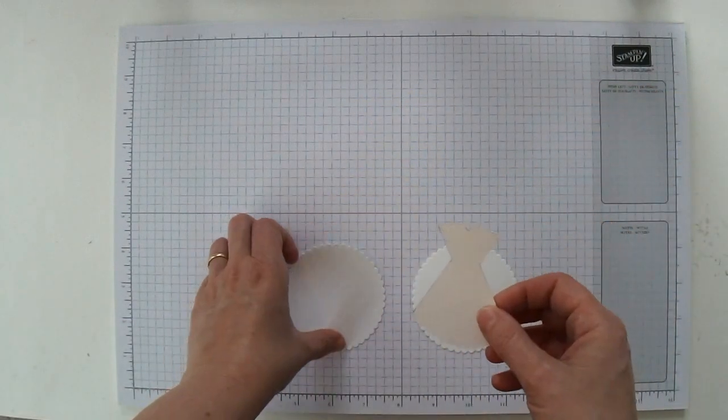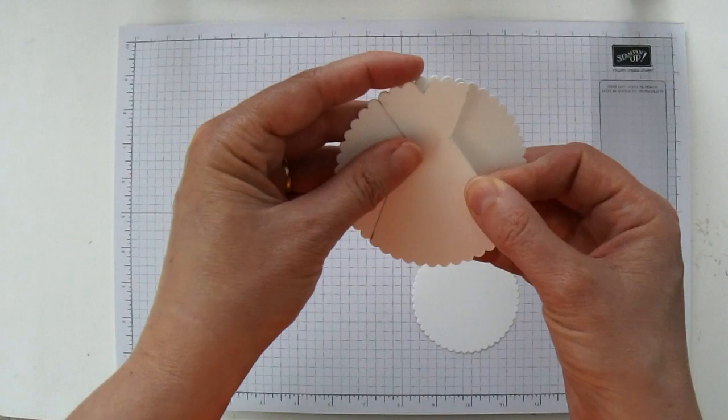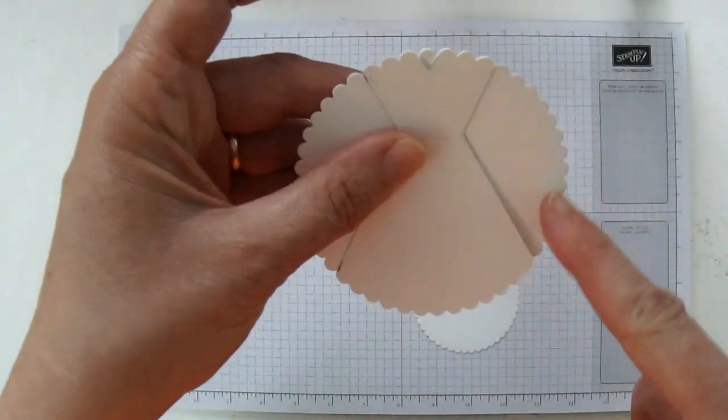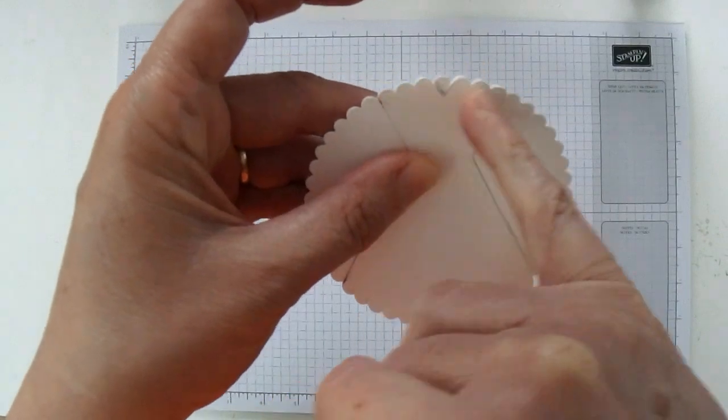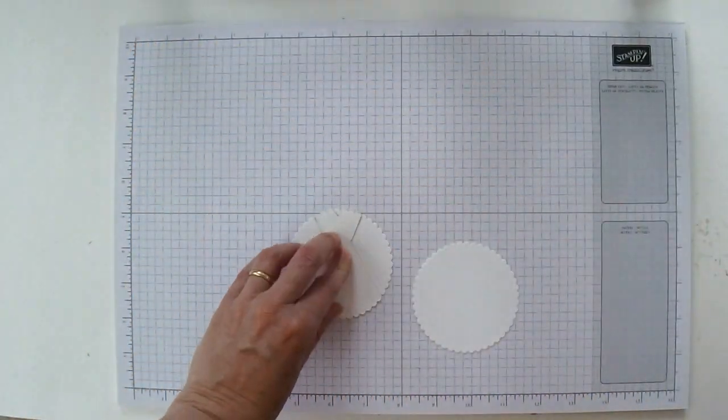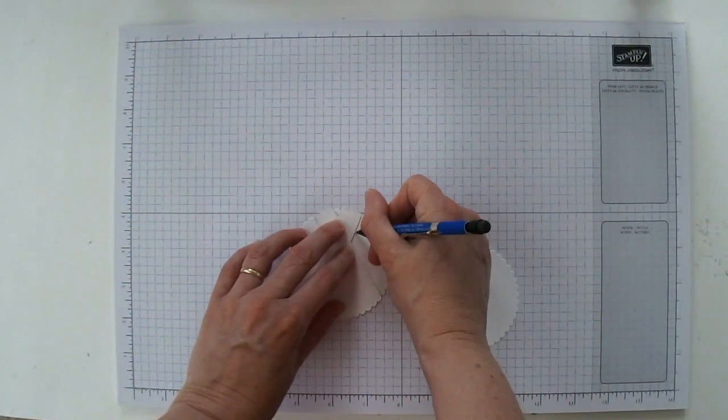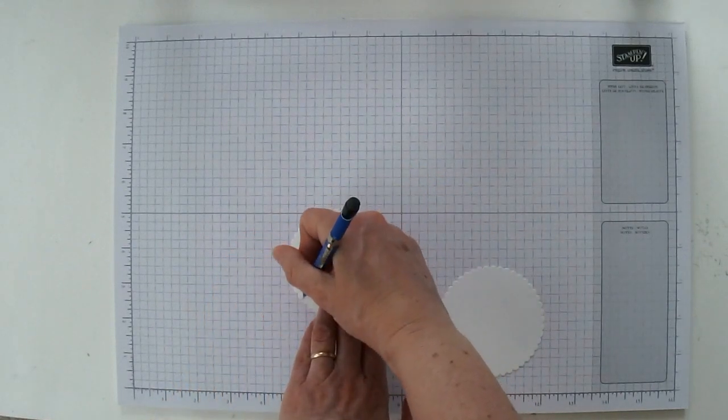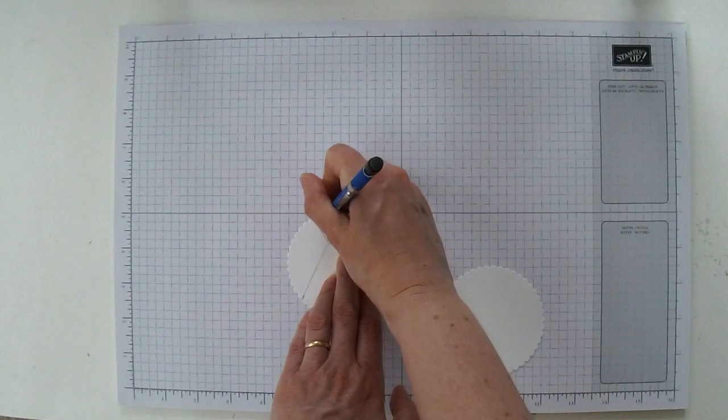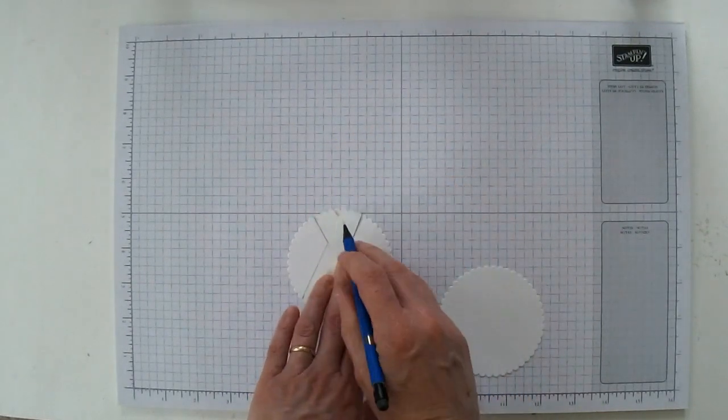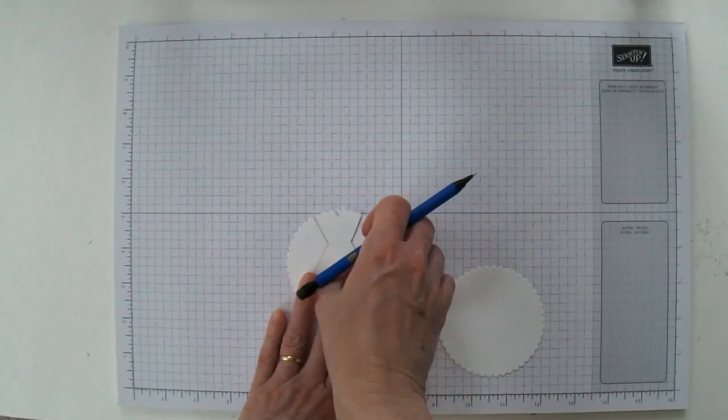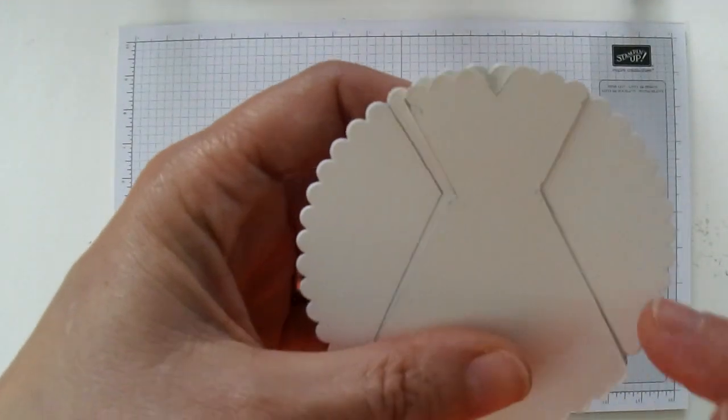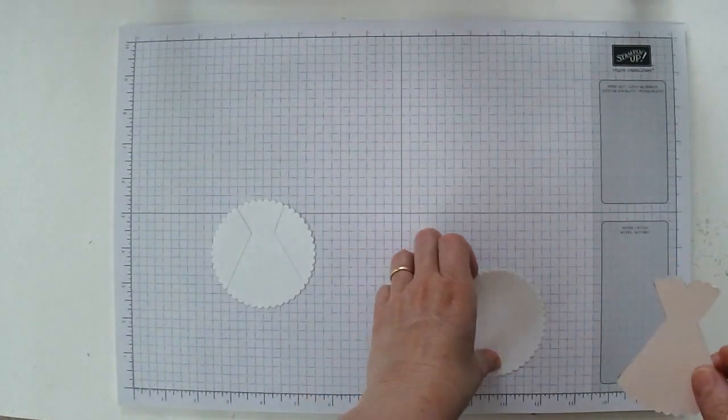I'm just going to trace it right now. So you're just going to take your dress template and line it up with the outer scalloped circles. Make sure it lines up nicely. And then you're going to go ahead and trace it right onto the scalloped circle, just the outside. And for the wedding dress, I'm not going to do this little V here up at the top that I did with the other dresses.